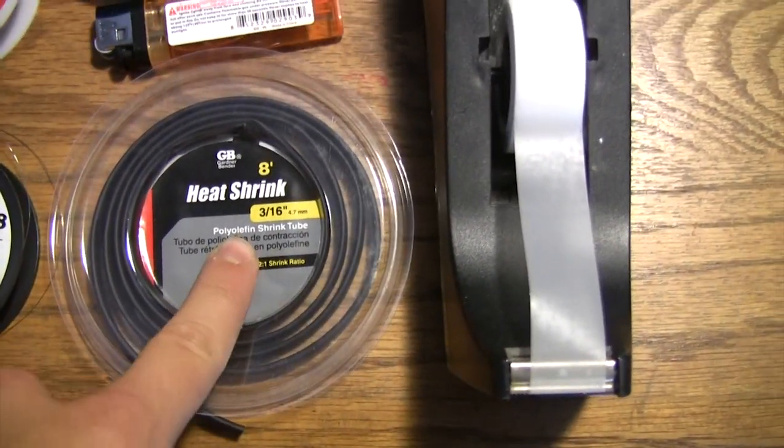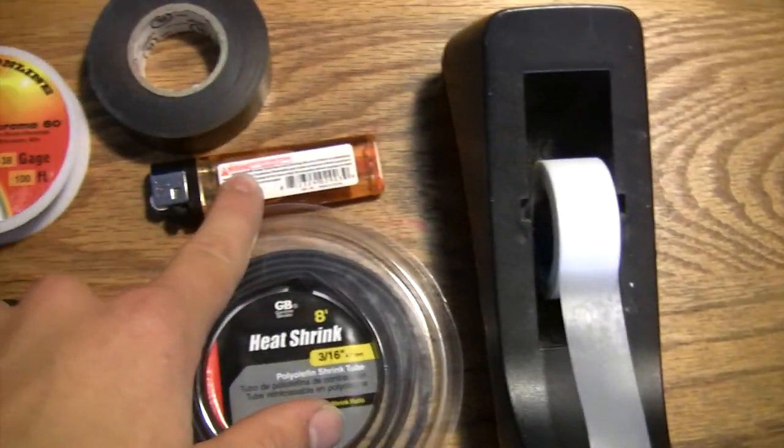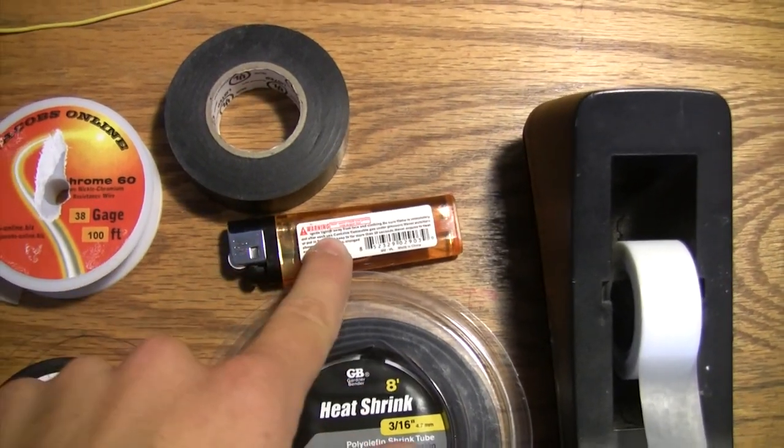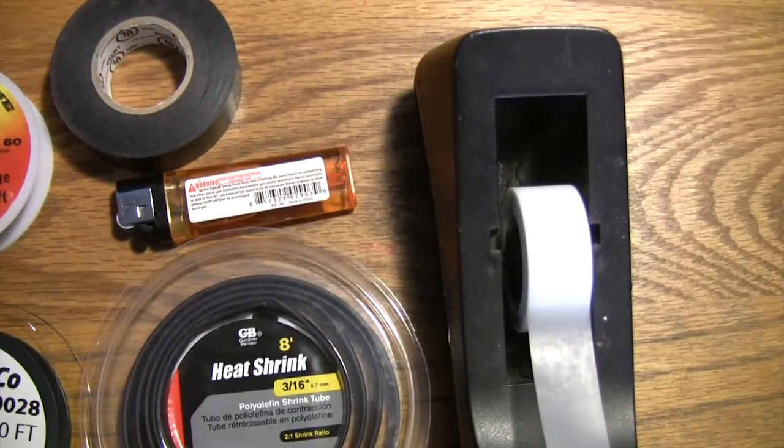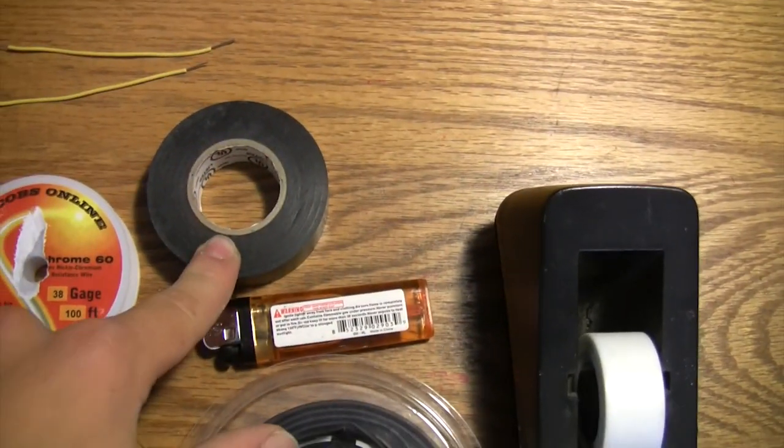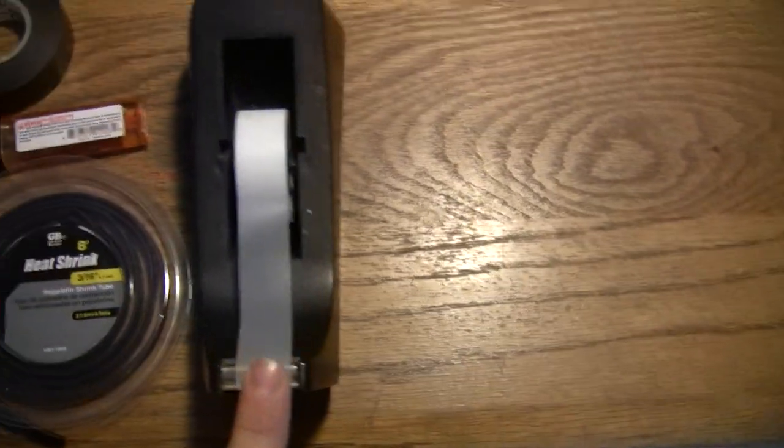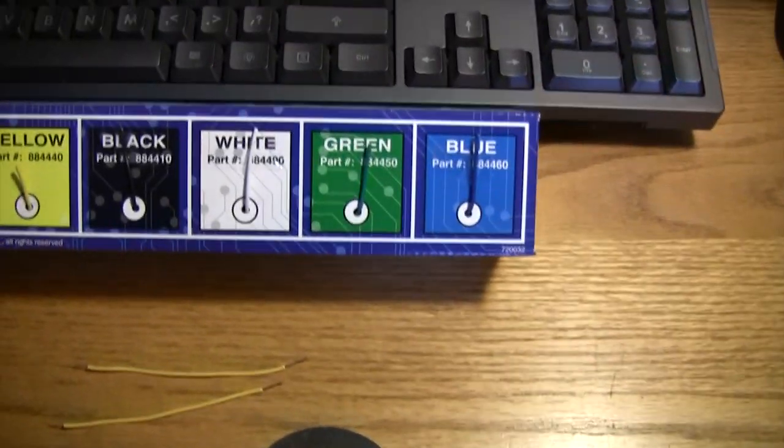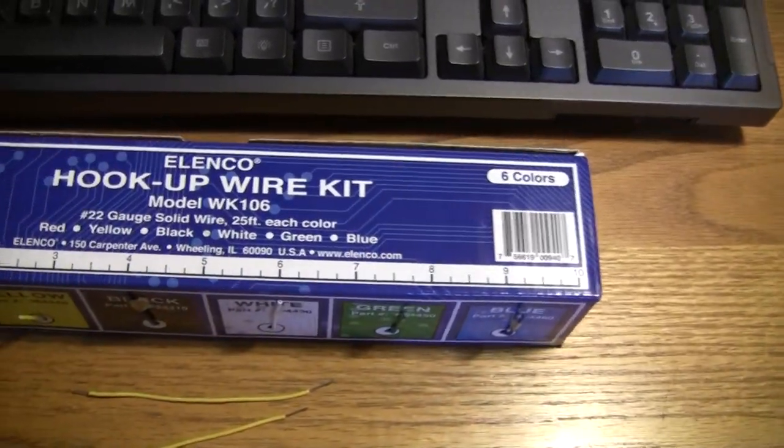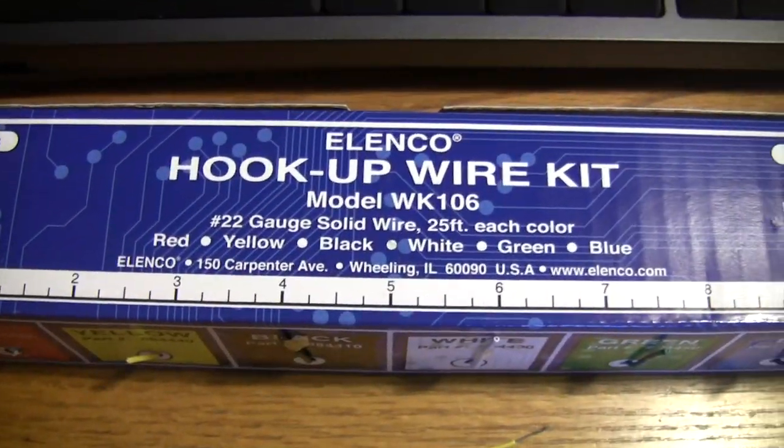You'll also need heat shrink tubing, a lighter, which I don't recommend. I would recommend a heat gun. You'll also need some electrical tape, some regular scotch tape, and some 22 gauge solid wire.